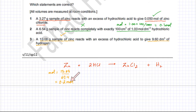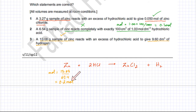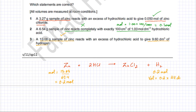You have 0.2 moles of zinc. Zinc and hydrogen exist in a 1:1 ratio — one zinc produces one hydrogen molecule — so the moles of hydrogen are also 0.2 moles. The volume of hydrogen equals moles multiplied by molar volume (24 dm³). That gives 0.2 multiplied by 24, which equals 4.8 dm³. This shows option number 3 is incorrect — you're not going to get 9.6 dm³.